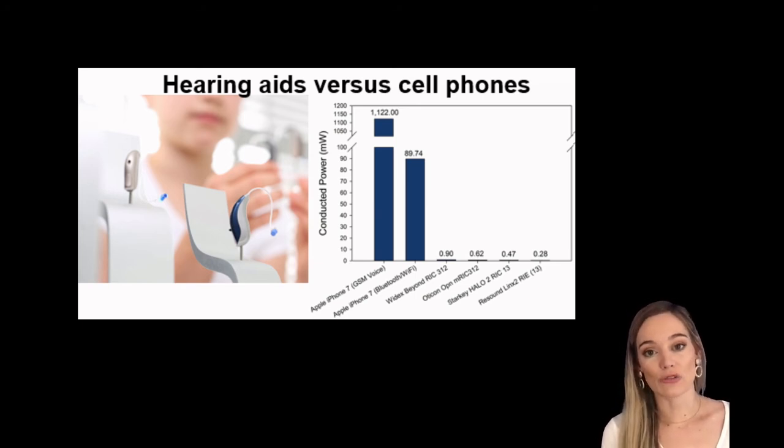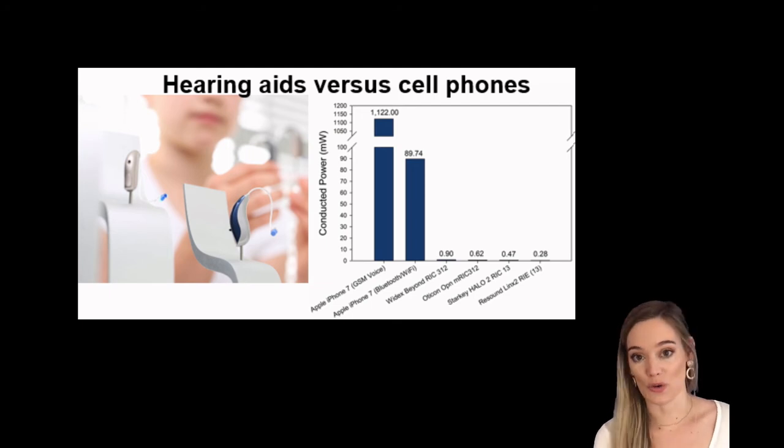So the cell phones comply to the standards in other words the SAR value is below 1.6 and hearing aids are way below what is the recommended maximum.